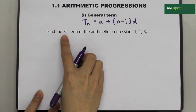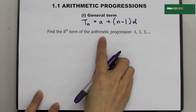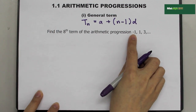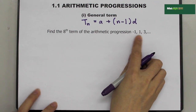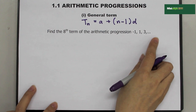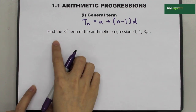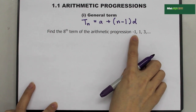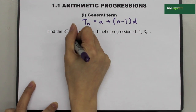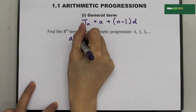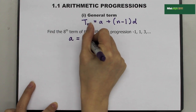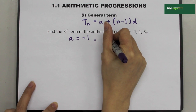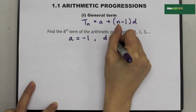For example, find the eighth term of the arithmetic progression: negative 1, 1, and 3. From this progression, we know that A is negative 1. And D is the common difference.